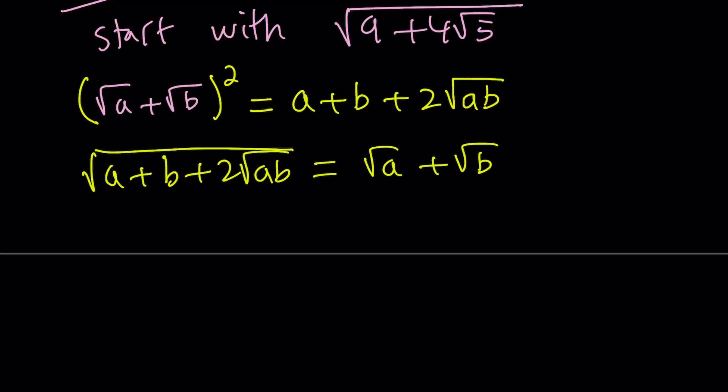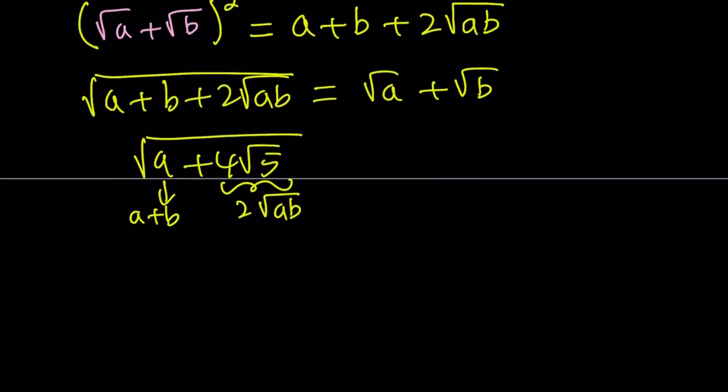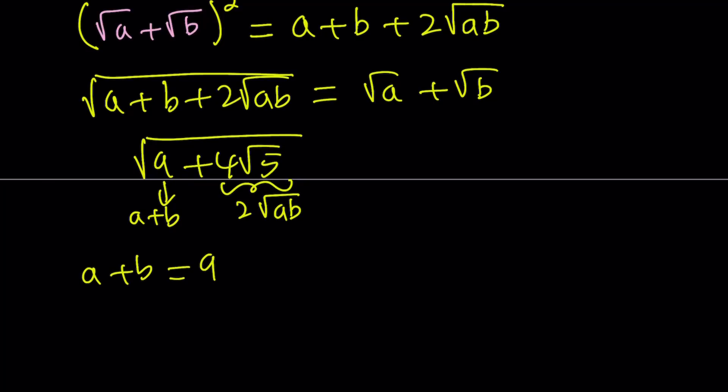Now, since we established that, let's compare this to our expression. I want to simplify this expression and be able to write it as a sum of two radicals. I do need the A plus B to be 9. So, this is supposed to be A plus B in my expression, and this is supposed to be 2 root AB. That implies A plus B equals 9, and 2 root AB equals 4 root 5. Cancel out the 2s, and from here, you get square root of AB is 2 root 5. If you square both sides, you get AB equals 20.